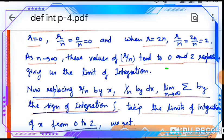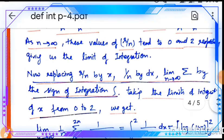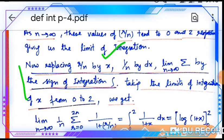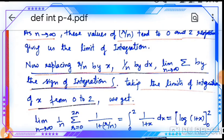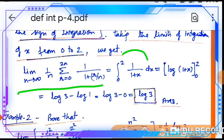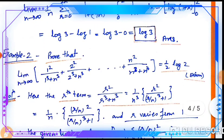So r/n ranges from 0 to 2. Applying our method — replacing r/n with x, 1/n with dx, and the summation with an integral with limits 0 to 2 — the summation converts to the definite integral: ∫₀² 1/(1+x) dx. Simplifying: [log(1+x)]₀², which gives log 3. So the answer is log 3.